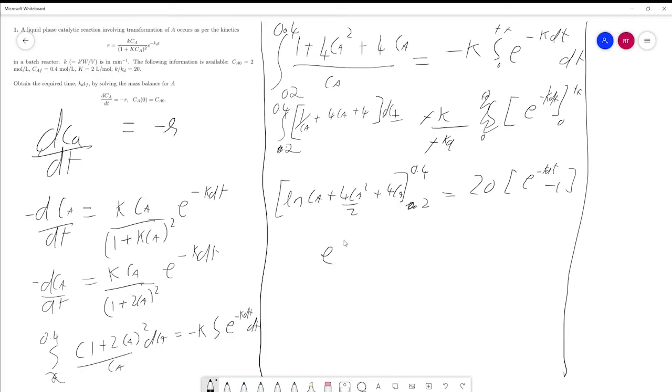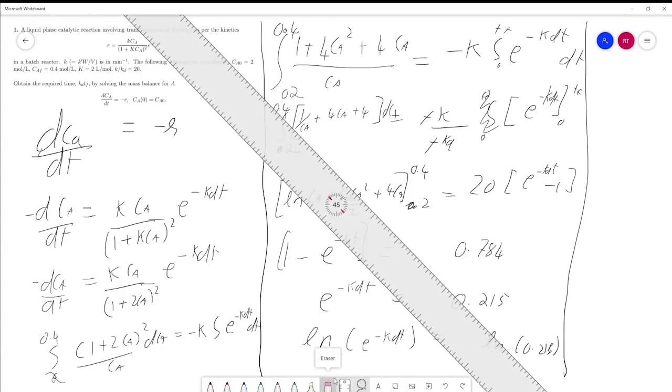E raised to minus KDT equals 0.784, and then solving this again, e raised to KDT is 0.215. Now you can just take the log of both of these.